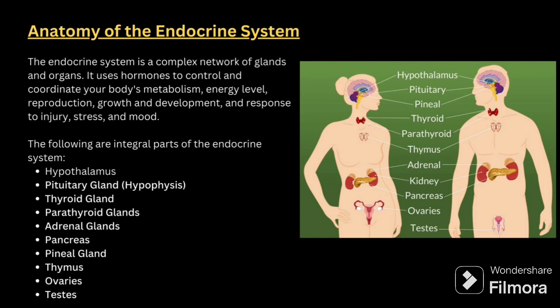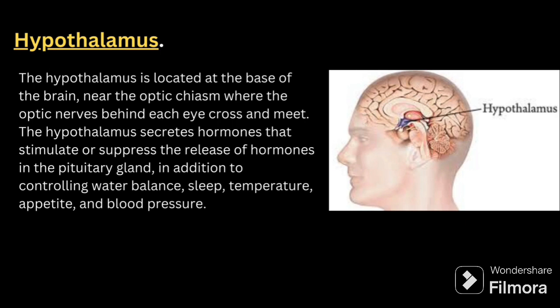We will be starting with the hypothalamus first. The hypothalamus is located at the base of the brain near the optic chiasm, where the optic nerve behind each eye crosses and meets. The hypothalamus secretes hormones that stimulate or suppress the release of hormones into the pituitary gland, in addition to controlling water balance, sleep, temperature, appetite and blood pressure. I have added an image here so that whenever you are talking about the hypothalamus, you can easily correlate it.